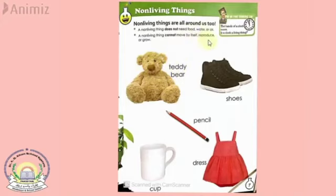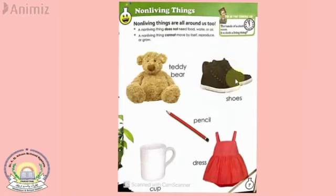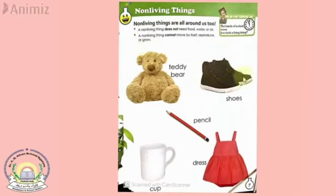A non-living thing cannot reproduce — it cannot make babies or copies of itself. This teddy bear cannot make a small or big teddy bear. A pair of shoes at your home cannot make another pair of shoes by themselves. You have to buy non-living things; they cannot reproduce on their own.